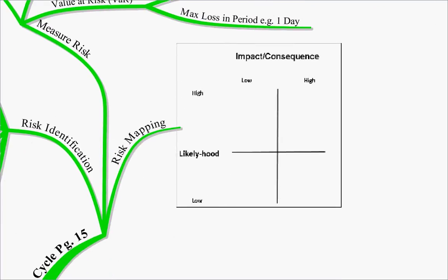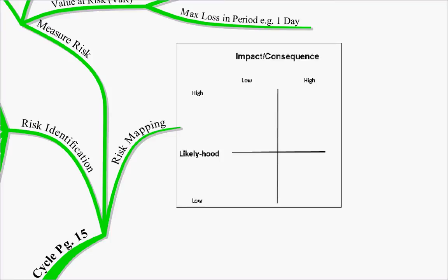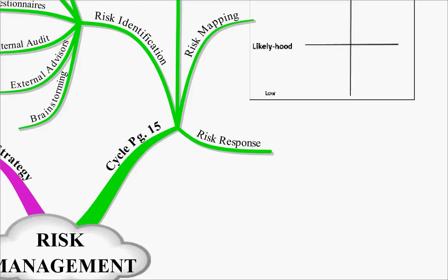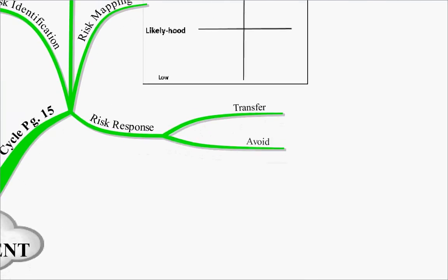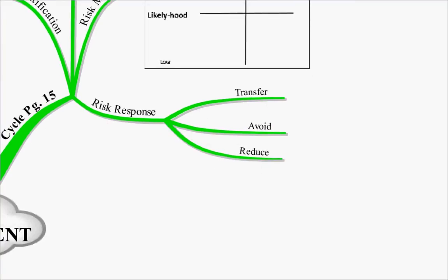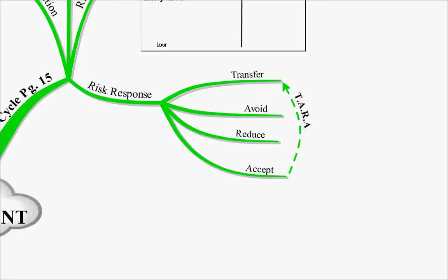This brings us on to risk mapping, where we use an impact and consequences matrix. We map the risks depending on whether they're likely to happen and the consequences if they do happen, being high and low in each category. Once we've mapped the risk we then need to respond to the risk. The four things we can do: we can transfer the risk, avoid the risk, reduce the risk through some sort of insurance, or accept the risk. The way to remember this is TARA.